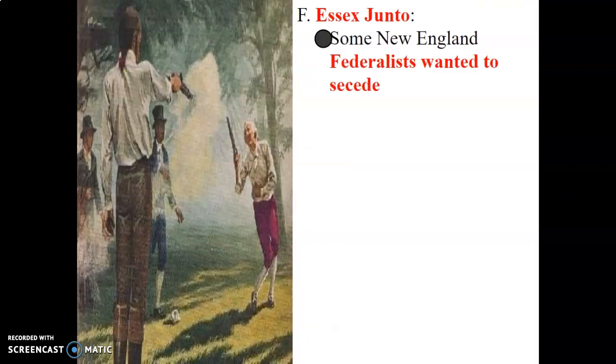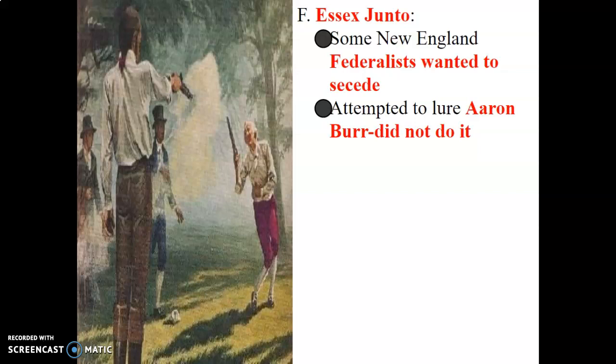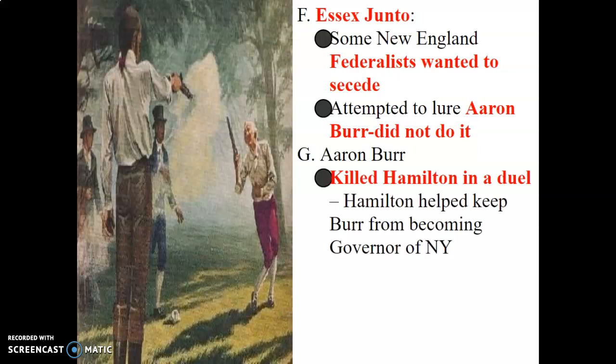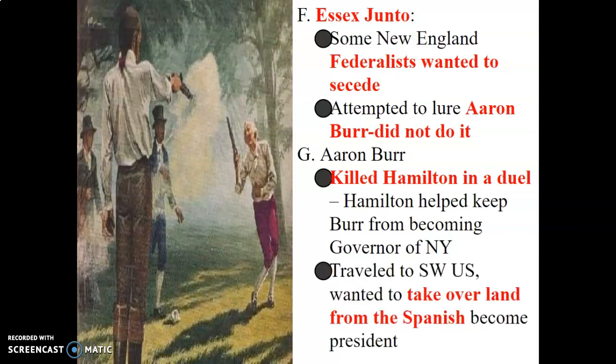We have the Essex Junto, where some New England Federalists wanted to secede, saying Jefferson was too extreme and they didn't want him in charge. They attempted to lure Aaron Burr, who was Vice President at the time, but he did not do it. A fun fact about Aaron Burr: he was the one that killed Alexander Hamilton — the man who created the financial system and the Bank of the United States — in a duel, because Hamilton had helped keep Burr from becoming governor of New York. Burr later traveled to the Southwest and wanted to take over land from Spain and become president, but he never became president.